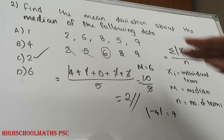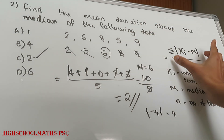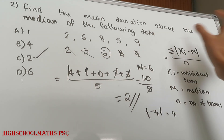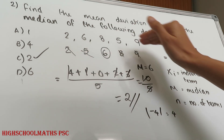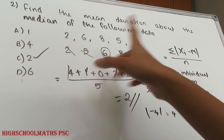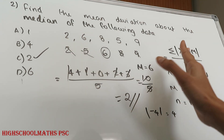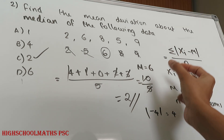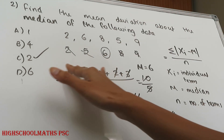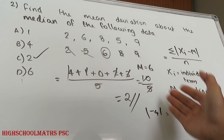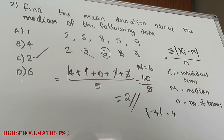We are going to use the equation here. First we find the median, then arrange in ascending order to find the middle term. We compute each modulus of (x_i minus m) term, sum them all, and divide by the number of terms to get the mean deviation.